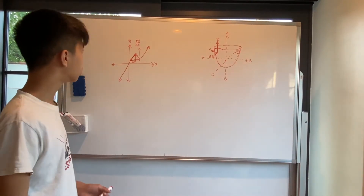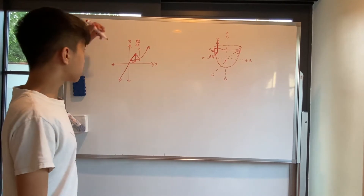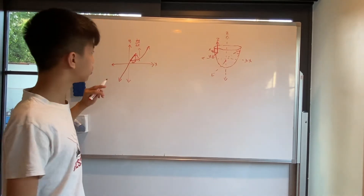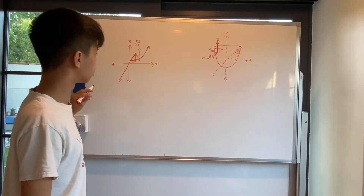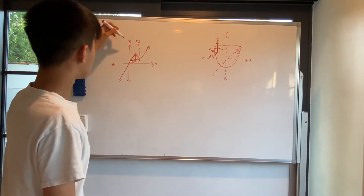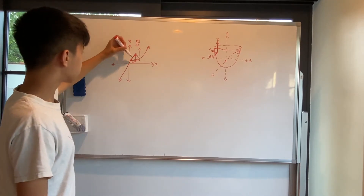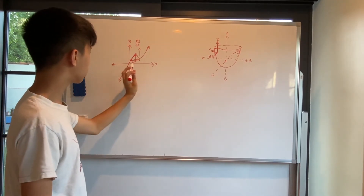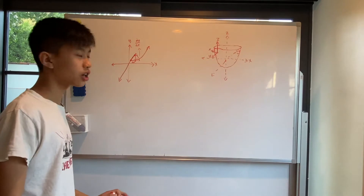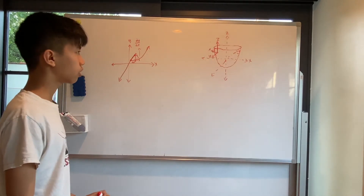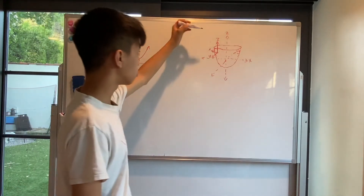When you want to calculate the derivative of two-dimensional functions, it's pretty easy. You just take the change in y over the change in x — there's not that much problem with doing that.